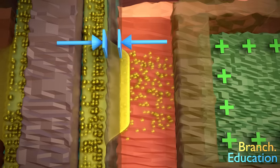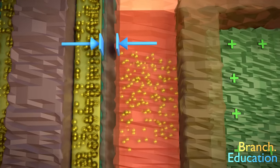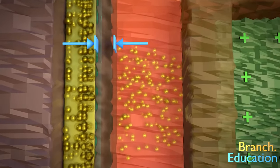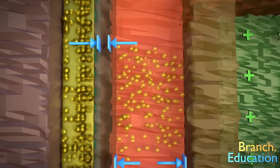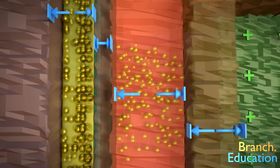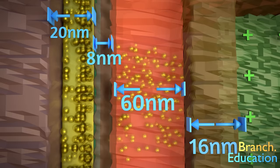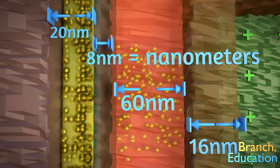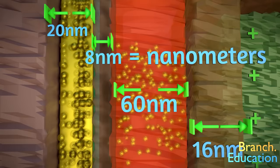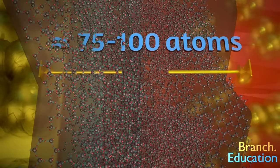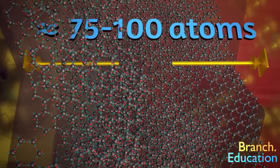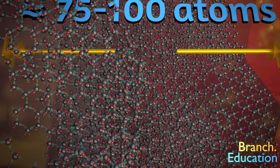In fact, perhaps the most impressive detail is how thin the dielectric barrier is. These are some of the smallest things humans have ever mass manufactured and, as you see, the dimensions shown here are in nanometers. If we were to zoom in on the dielectric, we find that it's only 75 to 100 atoms thick.